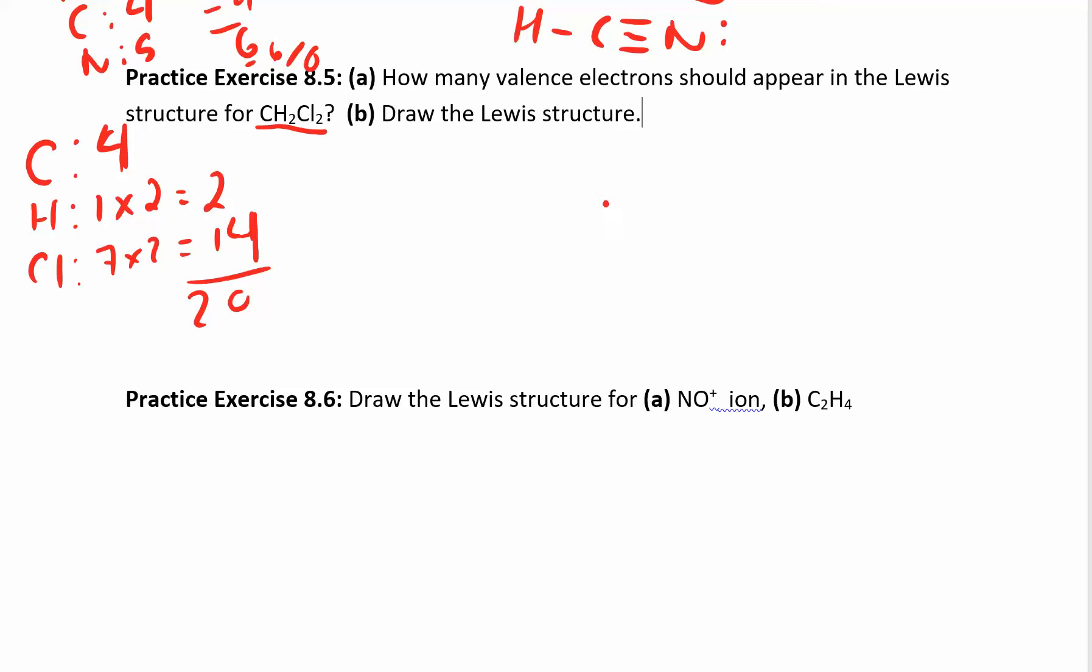Carbon loves to be in the middle, carbon loves to form covalent compounds. Now I'm going to connect everybody else with single bonds. It doesn't really matter how you arrange them, you can put two chlorines on the same side. This is really happening in three dimensions anyway, so any way you do it is fine. I just used up eight electrons, so I have 12 left over.